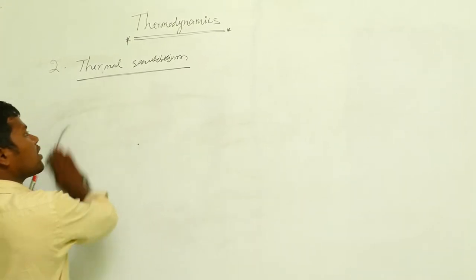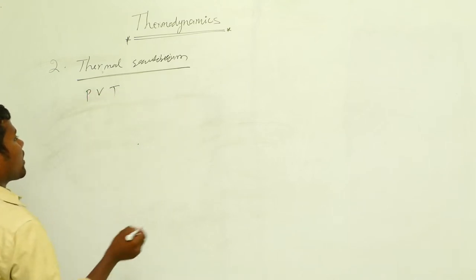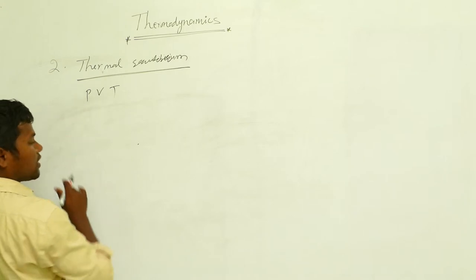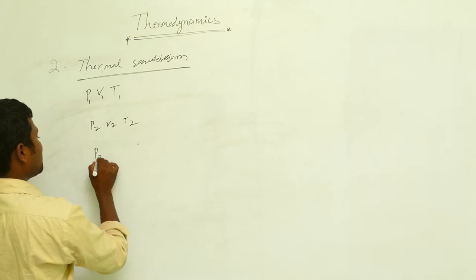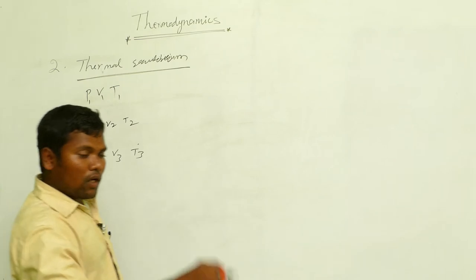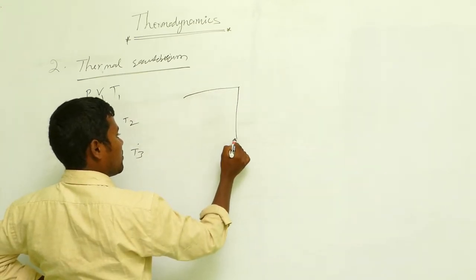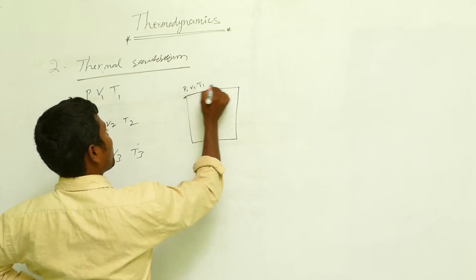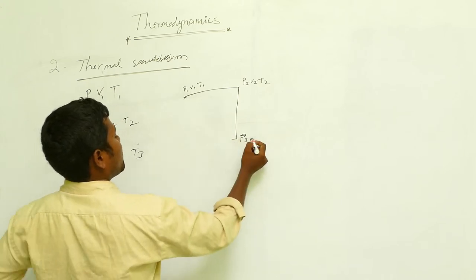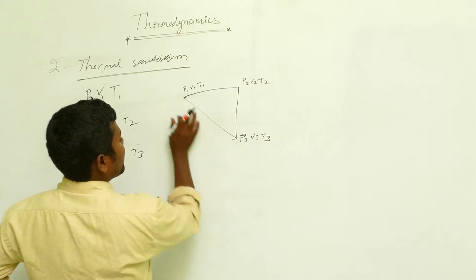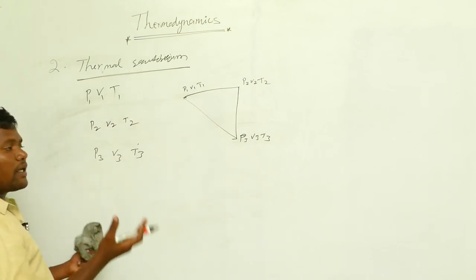In thermodynamics, internal energy and cyclic process also come up. The parameters are P, V, T. Consider a system with initial state P1, V1, T1. It goes to P2, V2, T2, then to P3, V3, T3, and then returns to the initial state P1, V1, T1. When you complete one full cycle like this — starting at one point and returning to the same point — we call it a cyclic process.